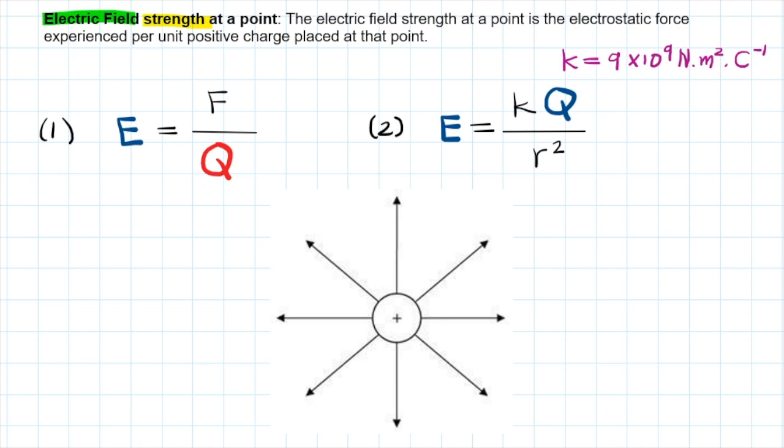When we measure the strength of an electric field we measure it at a specific point, a point that is a certain distance away from or towards a certain charge particle. We say that the electric field strength at a point is the electrostatic force experienced per unit positive charge placed at that point.